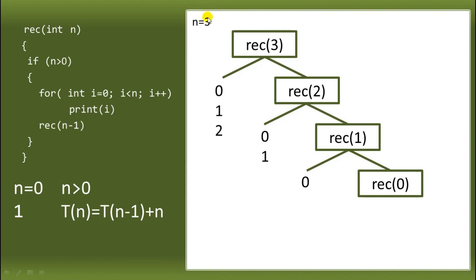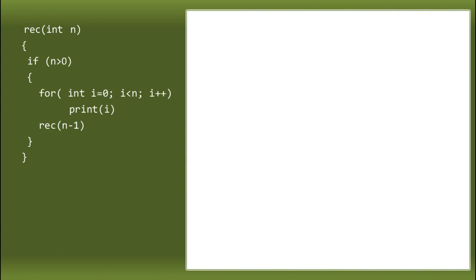Now, using the tree method analysis, let's count how many times the function called itself: 1, 2, 3, and 4 times. Notice N is 3 and the call count is 4, so we can say it's N plus 1. If N were 8, the call count would be 9. Now let's check the print count: when N is 3, it printed 3 times; when N is 2, it printed 2 times; when N is 1, it printed 1 time — each matches N. So the print count per call equals N.